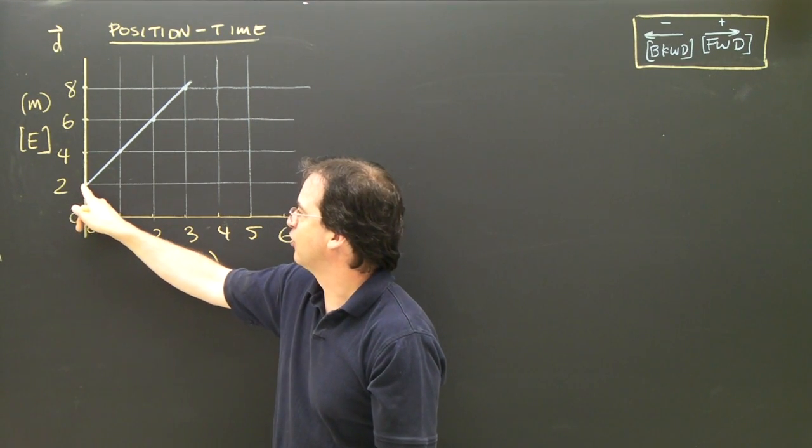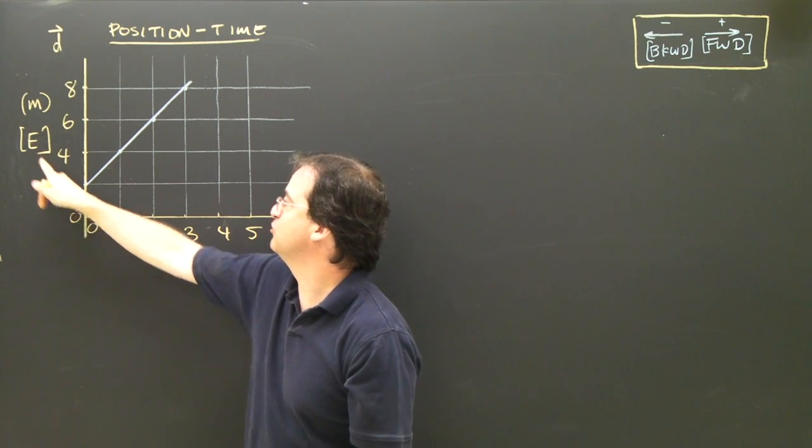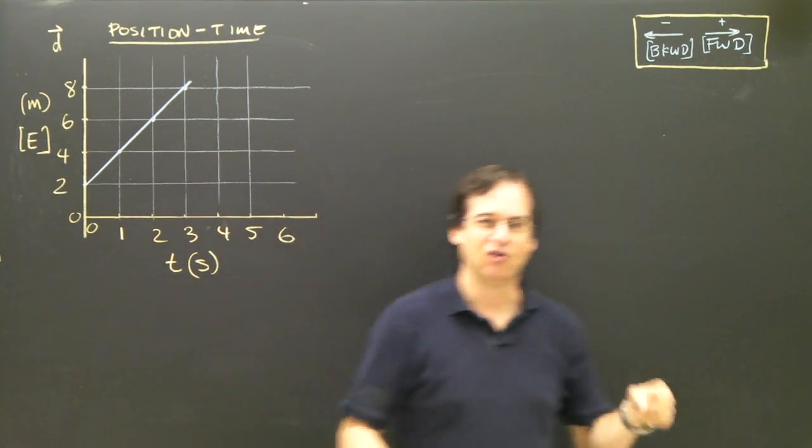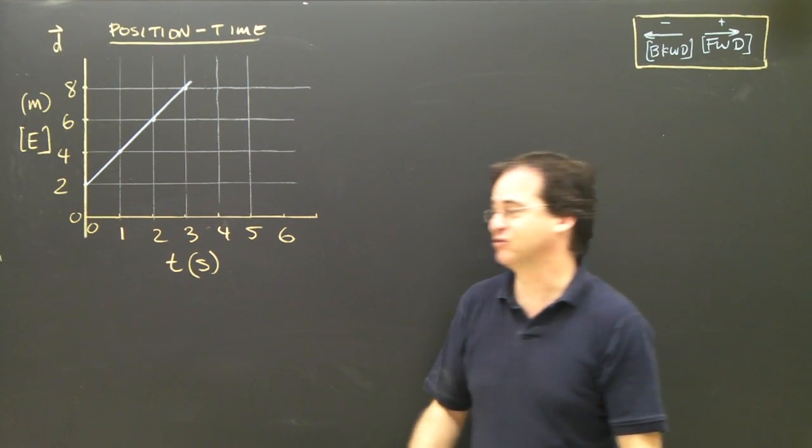So what I mean by that is, at zero seconds, I go up to the graph, and I see I'm at 2 meters. Positive 2, so that means east. East is that way, so I must be standing over here at positive 2 meters at the start of this graph.